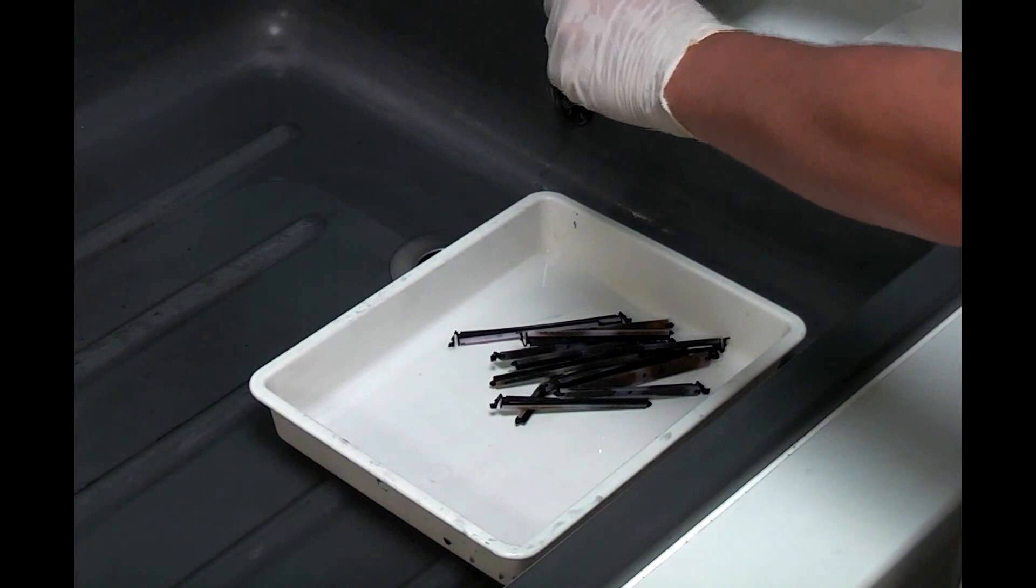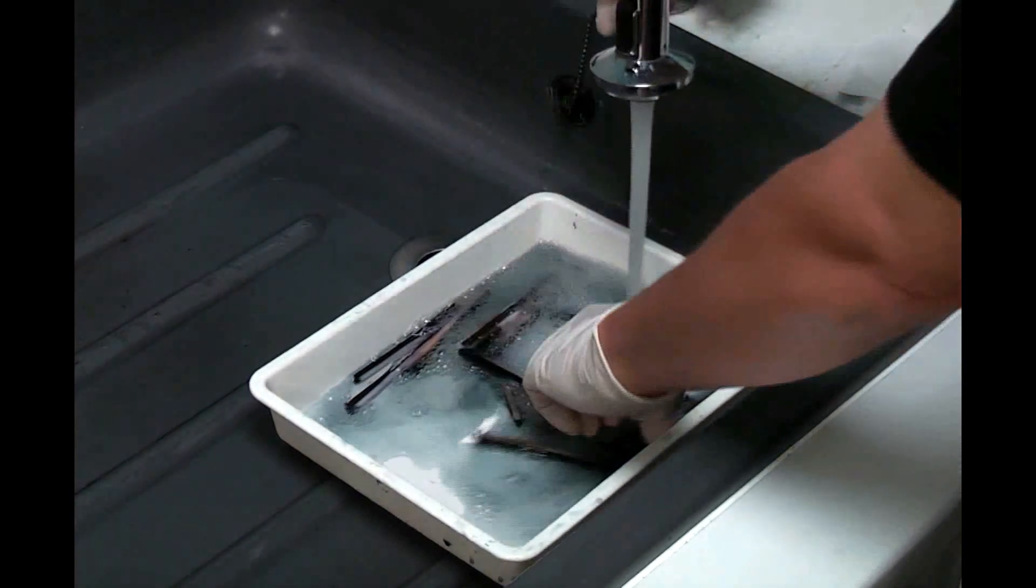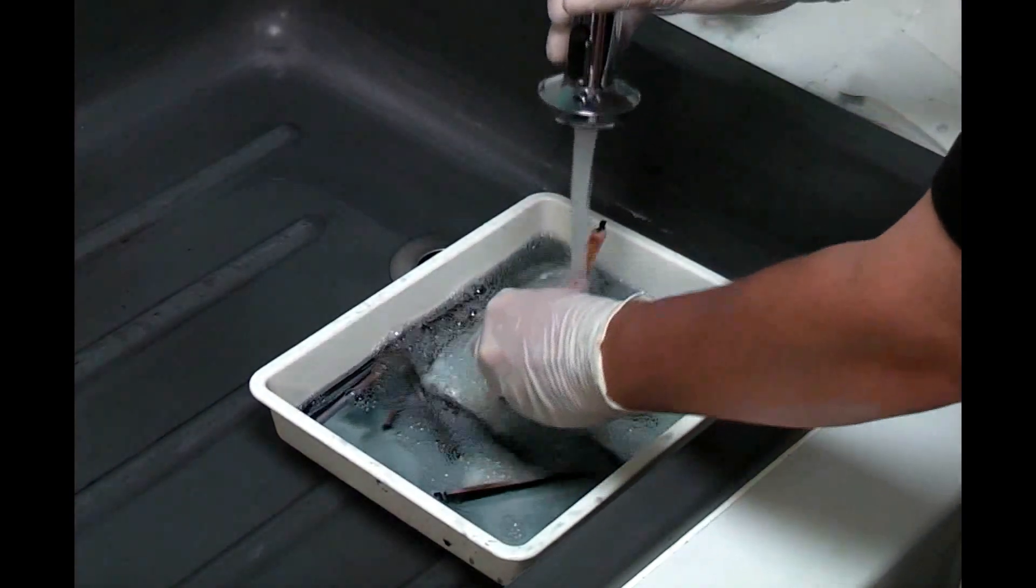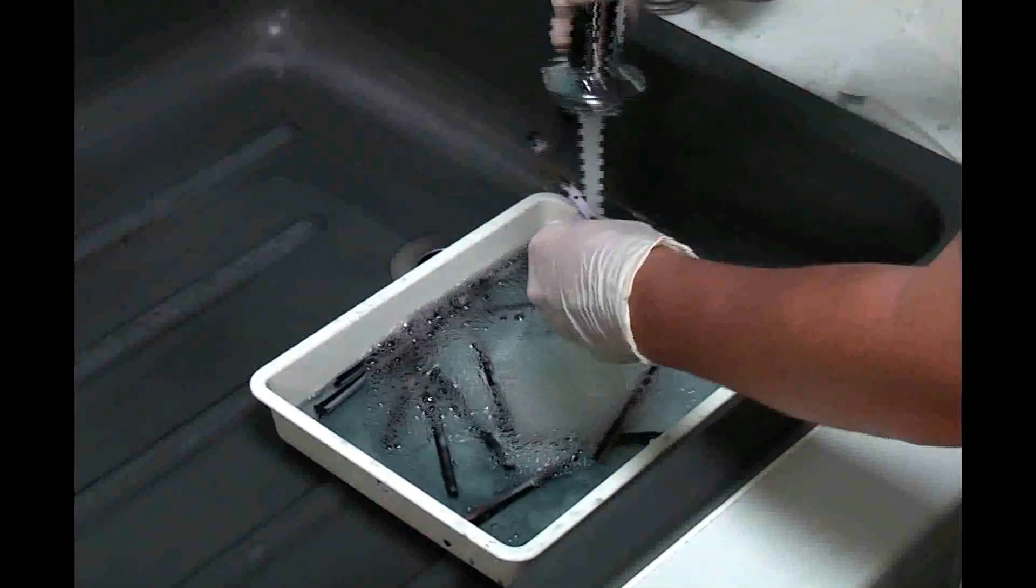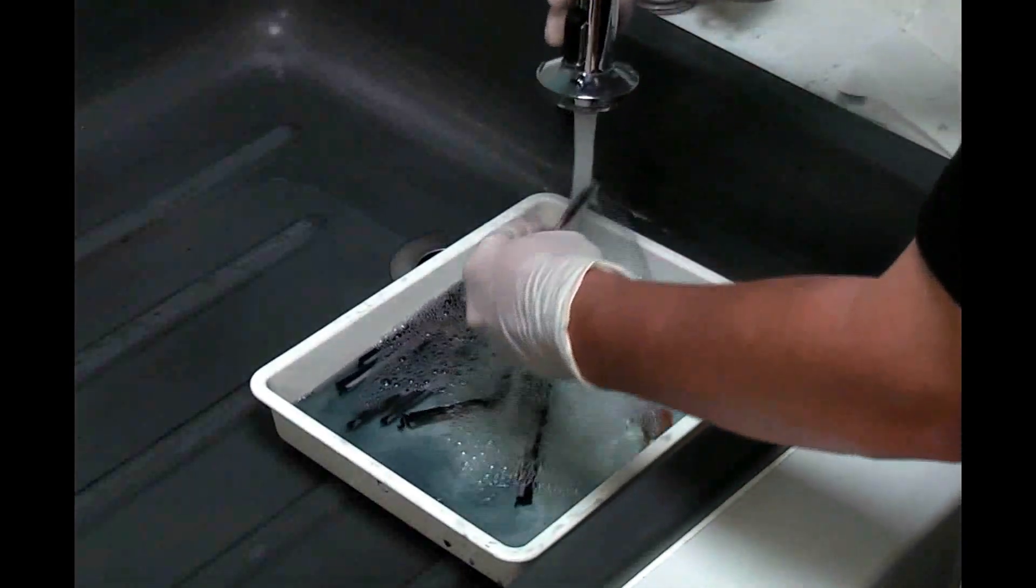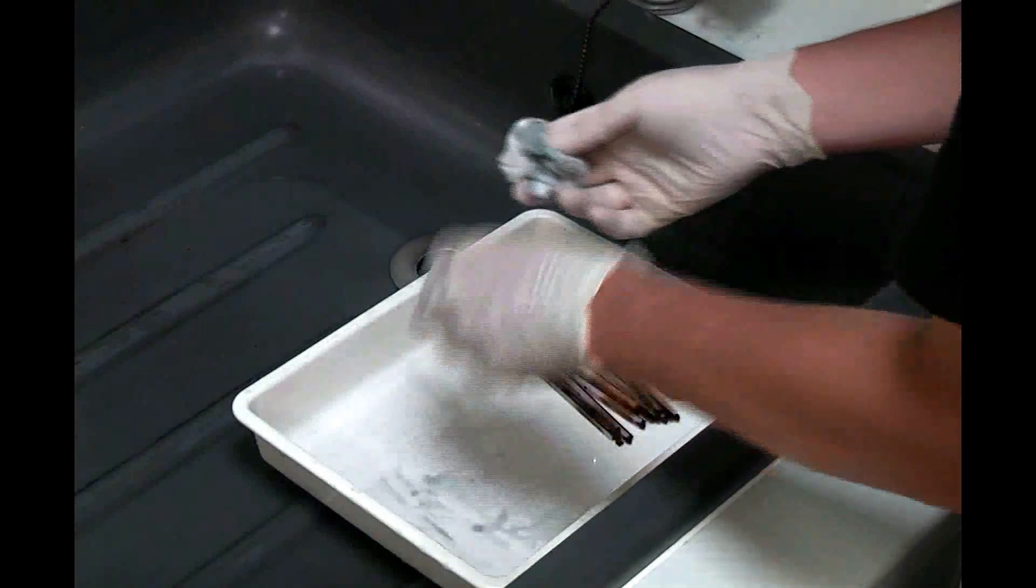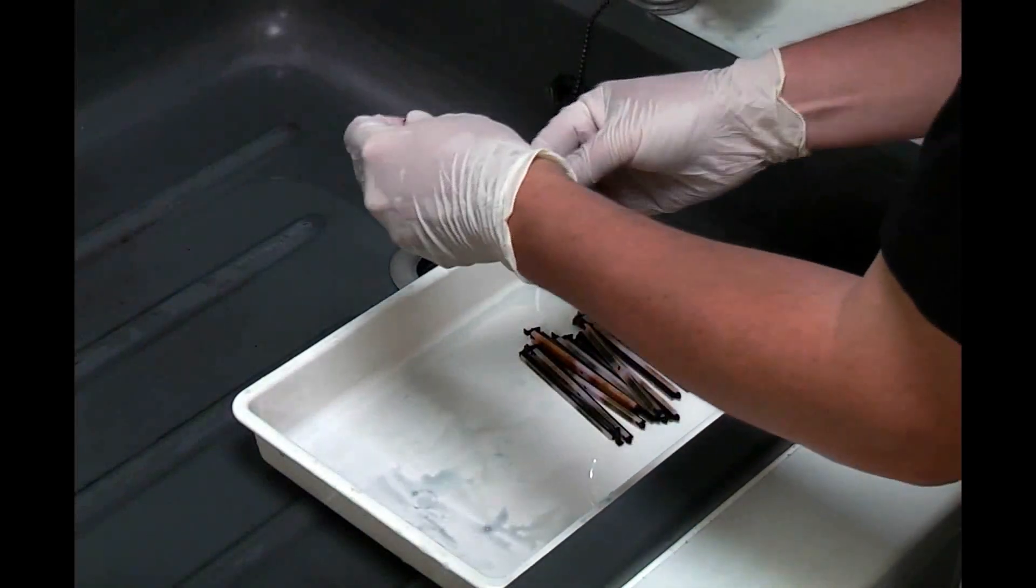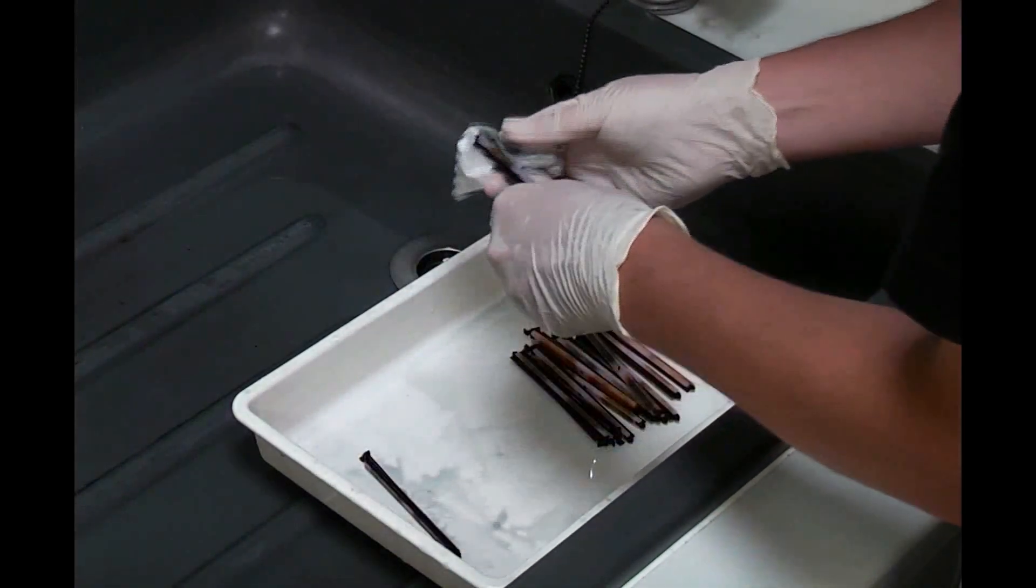The absorbers can be cleaned under running water and inspected for any damage. They can be dried with a cloth and left in the tray whilst the print mount is cleaned.